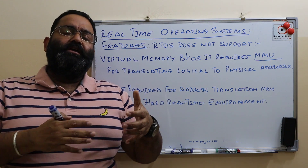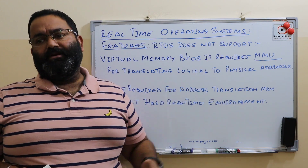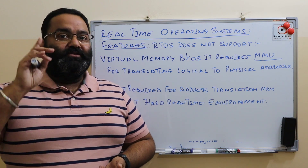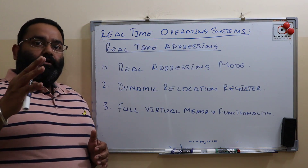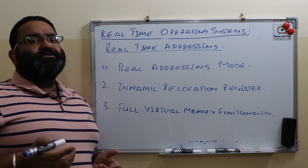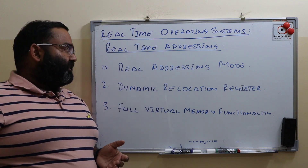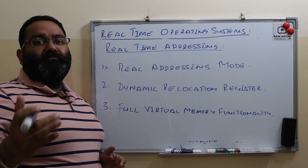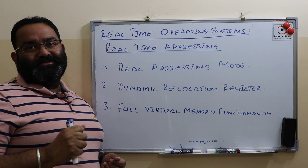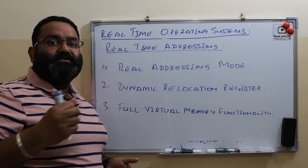If we translate the address and there is a cache miss, we must fetch the data from main memory and bring it to the cache, which takes a lot of time — and in a real-time operating system, we cannot afford to waste time. So how is addressing done in real-time operating systems? There are three addressing techniques: real addressing mode, dynamic relocation register, and full virtual memory functionality — though the last one is used in soft real-time, not hard real-time.